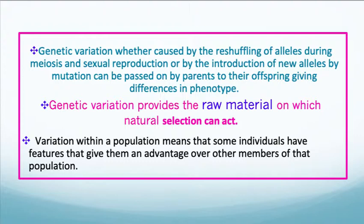Genetic variation, whether caused by the reshuffling of alleles during meiosis, or by the introduction of new alleles by mutation, can be passed on by parents to their offspring, giving differences in phenotype. Genetic variation provides the raw material on which natural selection can act. Variation within a population means that some individuals will have features that give them an advantage over other members of that population.